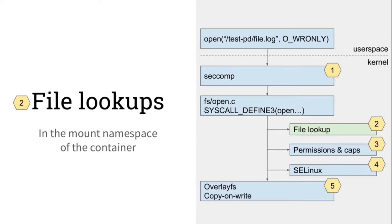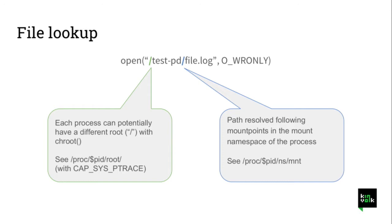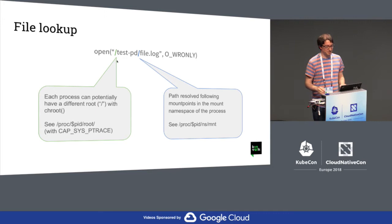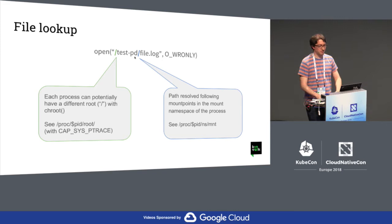Let's say the open system call was accepted by the seccomp filter, as it is the default with Kubernetes and Docker. Then the kernel can execute the code for the open system call, and it will have to find which file to open — so we will talk about the file lookup. File lookup can be done differently on different processes because processes can be chrooted. If it lives in a different chroot, the root of the file system is different. Typically in different containers we'll have different roots, and different containers can have different mounts, different volumes.